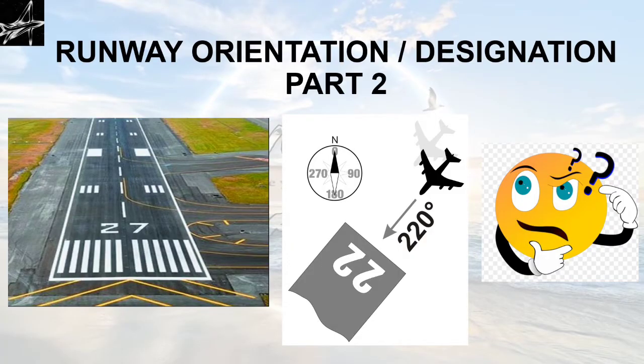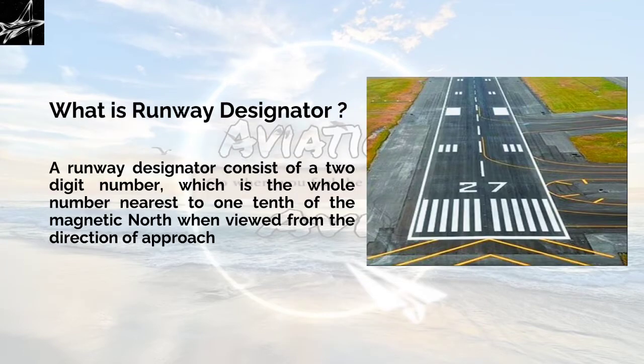Runway orientation and designation part 2. What is a runway designator? Let's have a recap. A runway designator consists of a 2-digit number which is the whole number nearest to 1 tenth of the magnetic north when viewed from the direction of approach. As we can see, 27 written here as runway designator means it is 270 degrees. When we take 1 tenth of the magnetic north, it becomes runway 27.